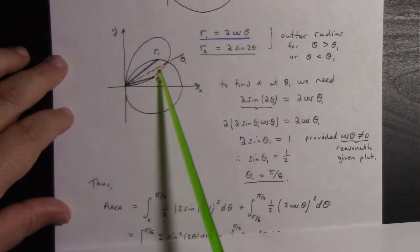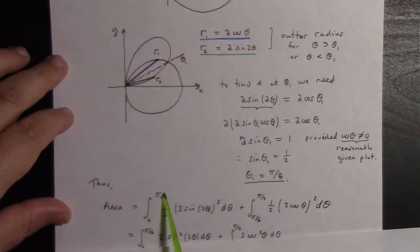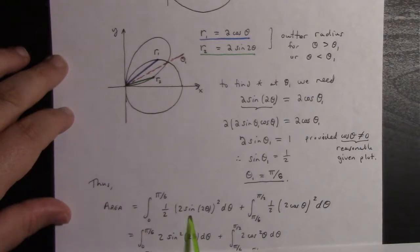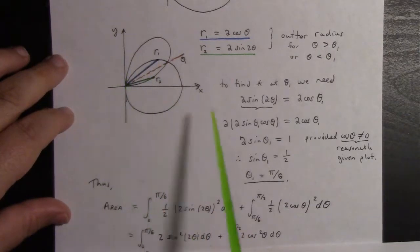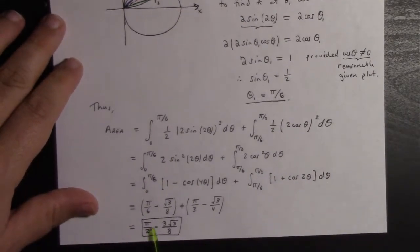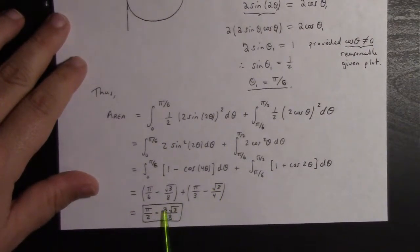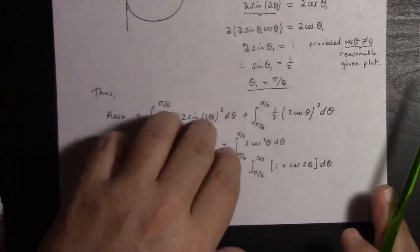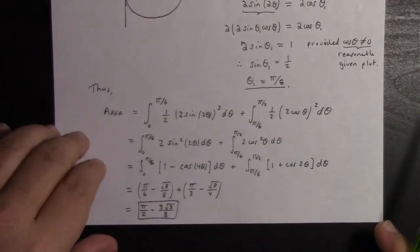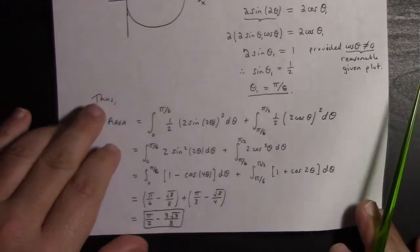The part below θ₁, from 0 to π/6, gives me r₂ = 2sin(2θ) as my outer radius squared, whereas from π/6 to π/2, we have 2cos(θ) as the outer radius. So we do those integrals and end up getting this answer. The number is not as important as the setup here. I hope that gets us started. Next on my stack is an old quiz where I do some of these things. Thanks guys.